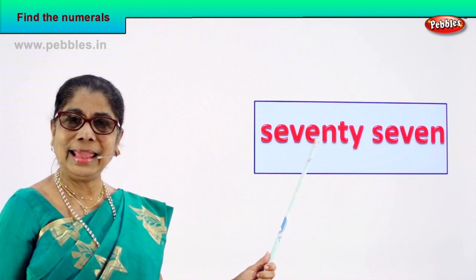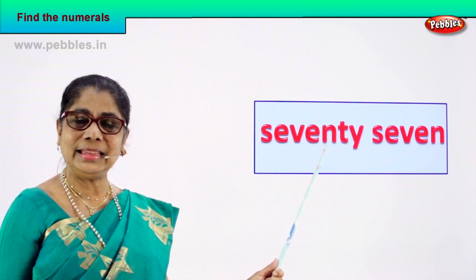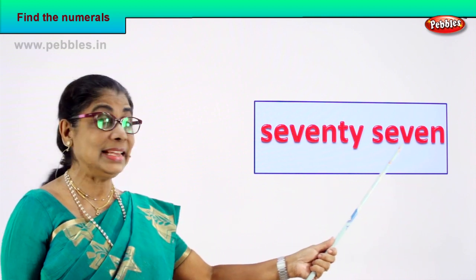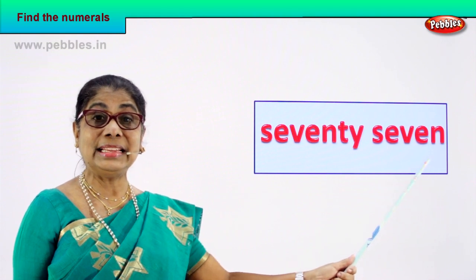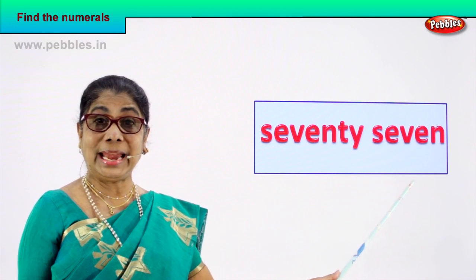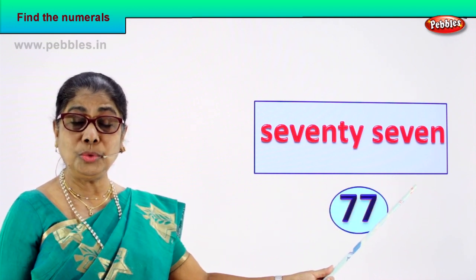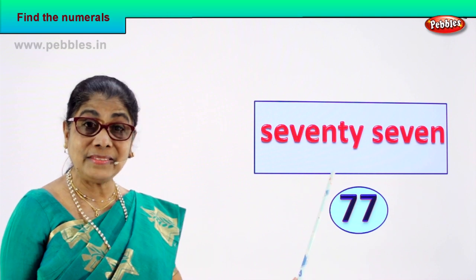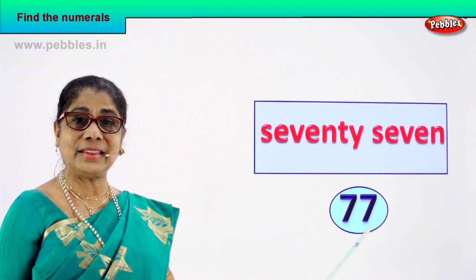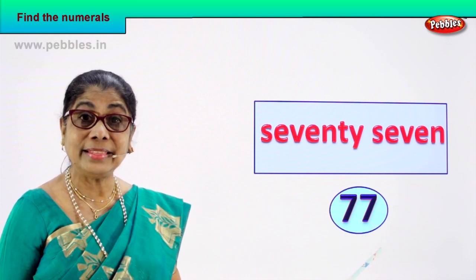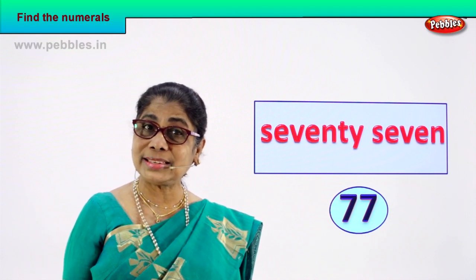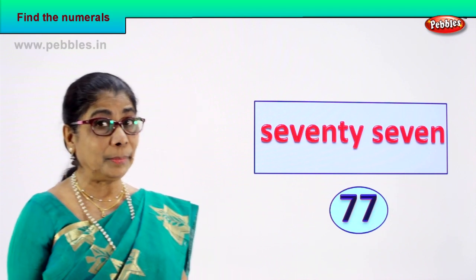Look. Spell: S-E-V-E-N-T-Y, 70. S-E-V-E-N, 7. 77. How do we write the numeral? 77 — seven and seven, 77. That's the numeral for this number name. Very good! Did you enjoy the exercise? Shall we take another number name?